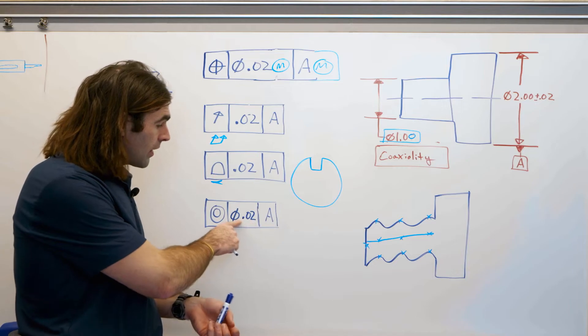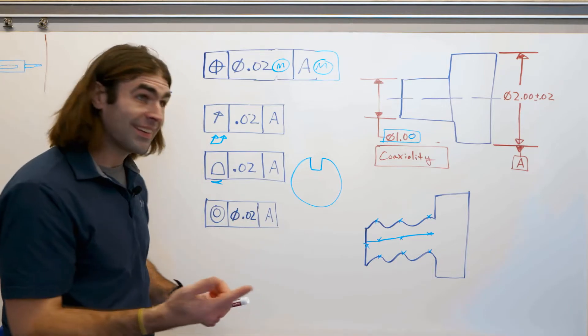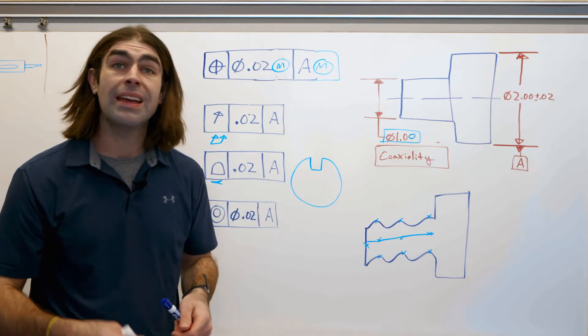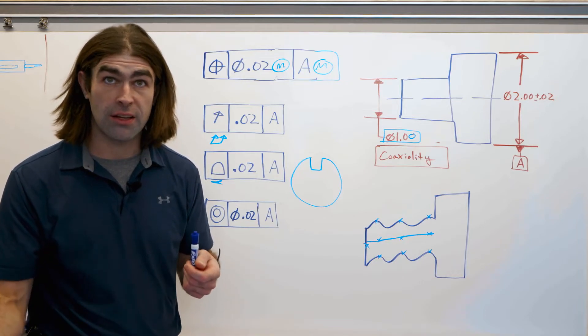Concentricity, this number right here, this 20 thousandths is the diameter of the tolerance zone that all those points should fit into.